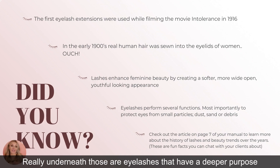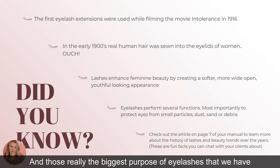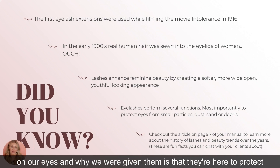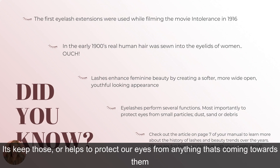The biggest purpose of the eyelashes we have on our eyes — the reason we were given them — is that they're here to protect our eyes from small particles, from dust, from sand, from anything coming our way. They help to protect our eyes from anything heading toward them.